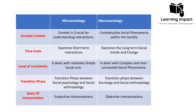Regarding time scale, micro sociology examines short-term interactions — for example, two friends interacting, or a panelist and interviewer having a conversation that ends when the interview is over. Macro sociology examines long-term social trends and changes, for example how the family institution has changed over time.